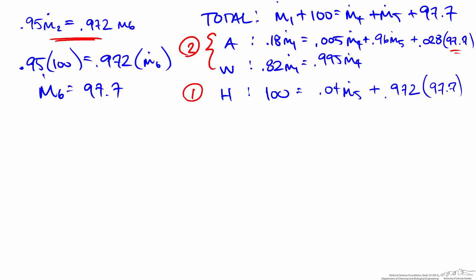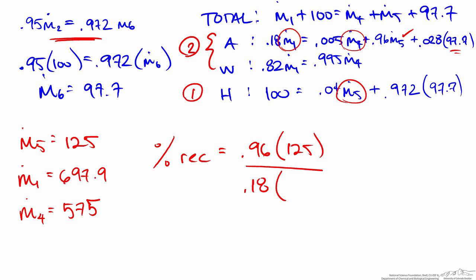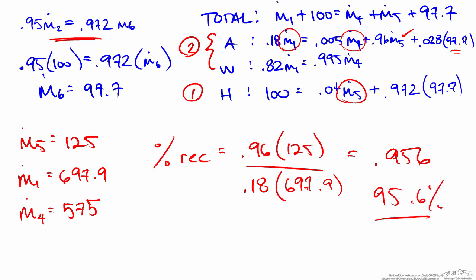Solving the hexanol balance gives m5 = 125. With m5 known, solving the acetic acid and water balances simultaneously yields m1 and m4. Finally, the percent recovery of acetic acid in the distillate is (0.96 × m5) / (0.18 × m1), where m1 = 697.9. This gives a recovery of 0.956, or 95.6 percent of the acetic acid recovered in the distillate.